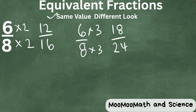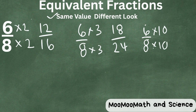Or we could even go 6/8ths times 10. I think you're beginning to get the point. That would be 60 over 80.